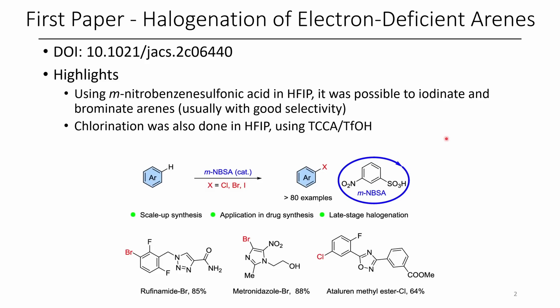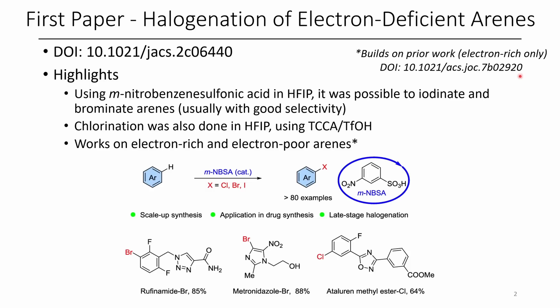Instead of using dibromodimethylhydantoin, they used trichlorocyanuric acid with trifluoroacetic acid. This worked on both electron-rich as well as electron-poor arenes. This builds on prior work where only electron-rich arenes had been examined. In the case of the prior work, only hexafluoroisopropanol was used, but in this work both hexafluoroisopropanol as well as an acid catalyst were used.